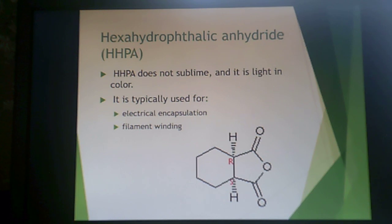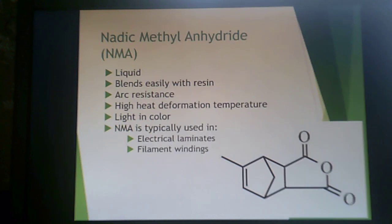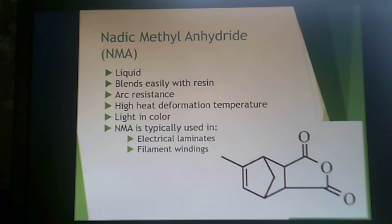Hexahydrophthalic anhydride (HHPA) does not sublime and has a nice light color; it's often used for electrical encapsulation or filament winding applications. Nadic methyl anhydride (NMA) is a liquid that blends very easily with the resin, provides good arc resistance and a high heat deformation temperature, is light in color, and is also used in electrical and filament winding applications.